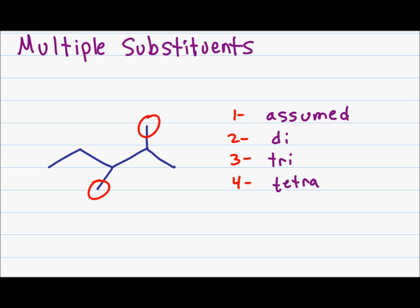If I have just one substituent I don't have to put anything because I assume there's only one. If I have two I put di, three is tri, and four is tetra.